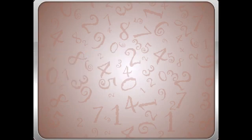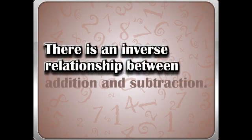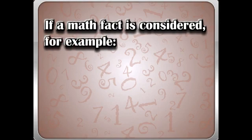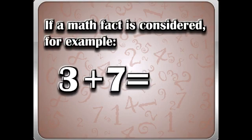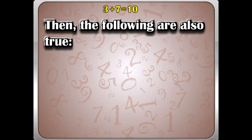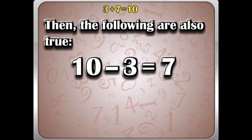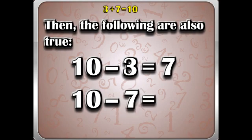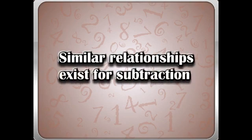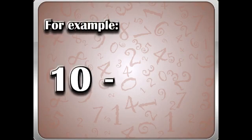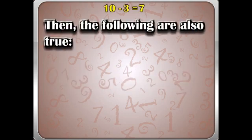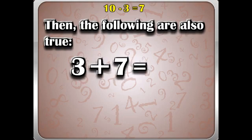Recap: There is an inverse relationship between addition and subtraction. If a math fact is considered, for example, 3 plus 7 is equal to 10, then the following are also true: 10 minus 3 is equal to 7, and 10 minus 7 is equal to 3. Similar relationships exist for subtraction. For example, 10 minus 3 is equal to 7, then the following are also true: 3 plus 7 is equal to 10, and 7 plus 3 is equal to 10.